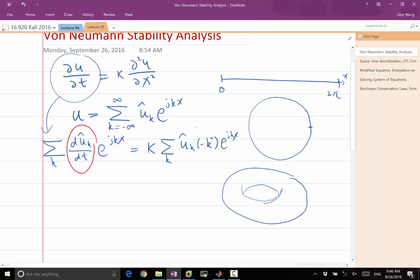If you match the coefficients, the coefficients on this side is this, on that side is this. What you get is d u hat k dt equal to kappa times minus k squared times u hat of k.